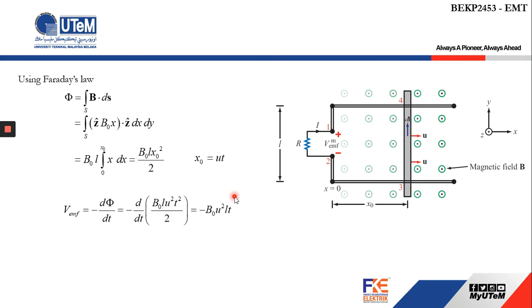We proved that whether we use the motional EMF equation or Faraday's general formula, we get the same result. To calculate the current, we simply divide the EMF value by the resistance R. Since the direction is negative, the direction of the current is clockwise as shown in the figure.